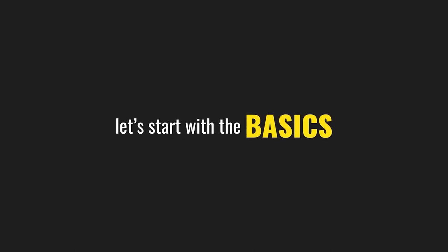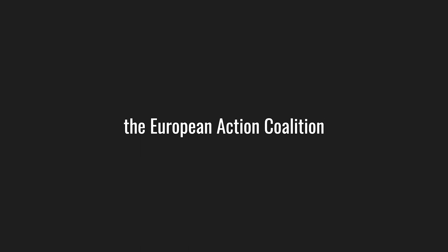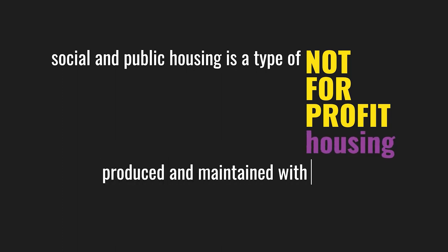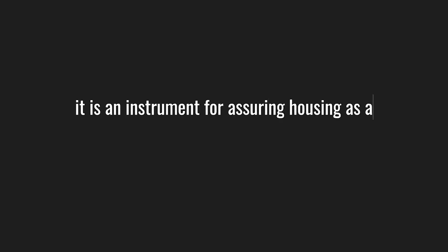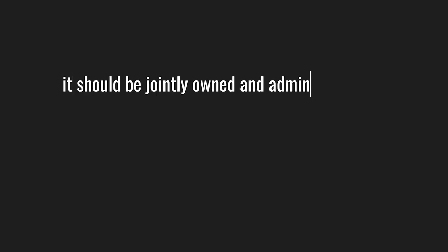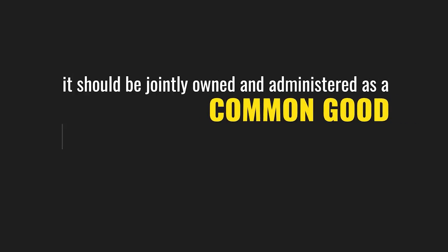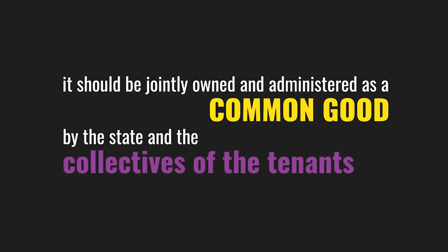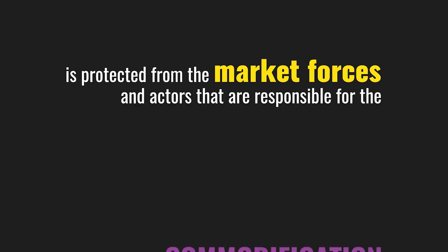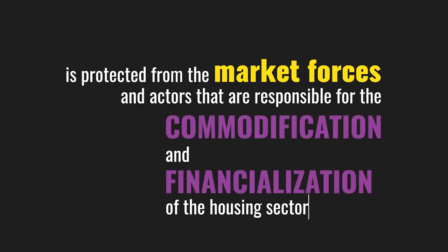The European Action Coalition considers that social and public housing is a type of not-for-profit housing, produced and maintained with the financial support of the state. It is an instrument for assuring housing as a universal human right. In our view, it should be jointly owned and administered as a common good by the state and the collectives of the tenants. It is rented out at a price that is affordable in accordance with the tenant's income. This type of housing is protected from the market forces and actors that are responsible for the commodification and financialization of the housing sector.